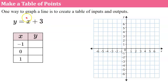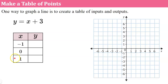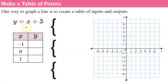One way to graph a line is to create a table of inputs and outputs — this is the first method I show my students. We have our linear equation y equals x plus 3. I've given you a table with x inputs, and I'm asking you to use negative 1, 0, and 1. I like students to use three points so it checks their math. You really only need two points to graph a line; the third one's a bit of an insurance policy. You could put any three numbers here that you wanted. We're going to evaluate this linear equation for these three inputs.